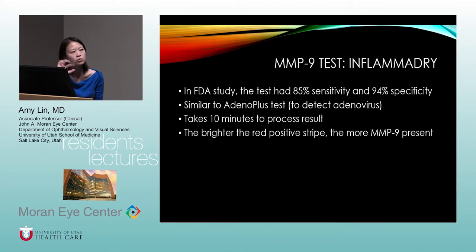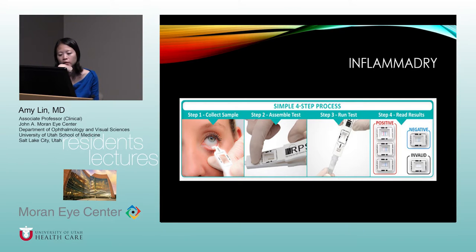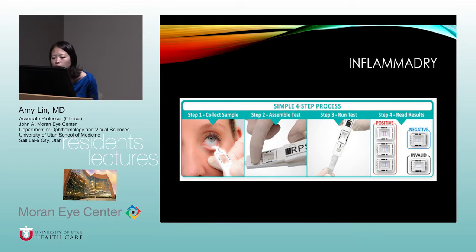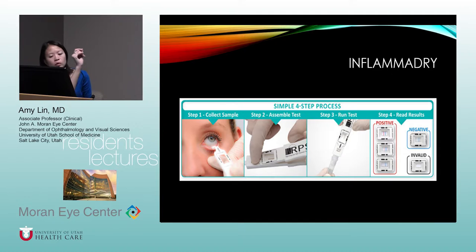The Inflammadry test is similar to a pregnancy test and takes 10 minutes to process. You touch the inferior tarsal conjunctiva to collect tears, run the test, and read results after 10 minutes. If you see a pink positive stripe, it's positive. The brighter the stripe, the more MMP9 is present — a faint stripe means technically positive but with less MMP9, while a bright stripe indicates a lot.